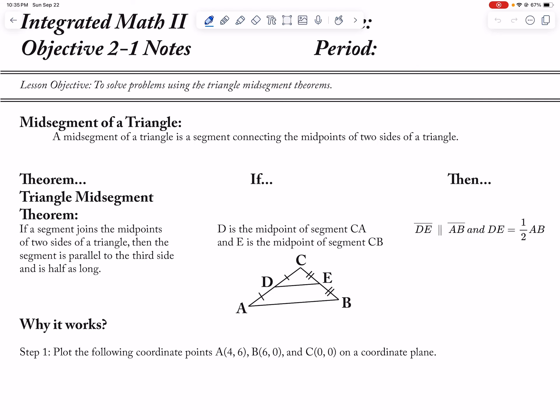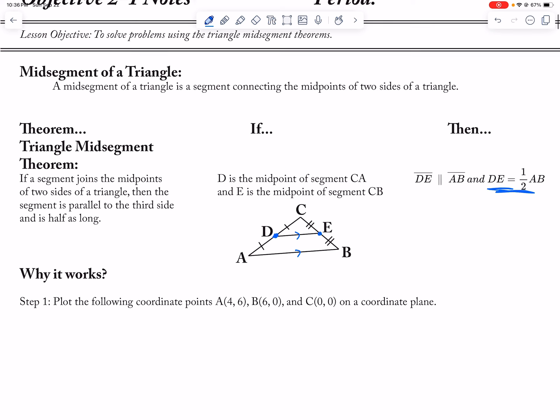Okay, so let's go ahead and take a look at this objective. So, the midsegment theorem. What it says is that if D is the midpoint of CA and E is the midpoint of CB, then a couple things happen. One, DE is parallel to AB, and then DE is half the size of AB.